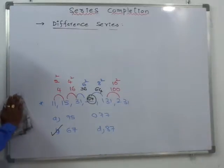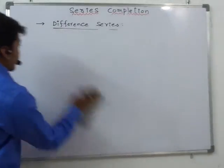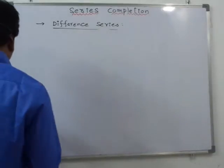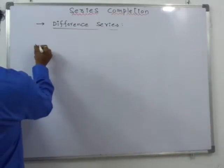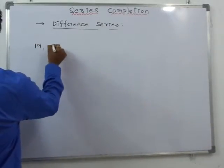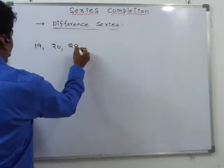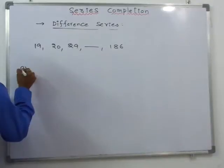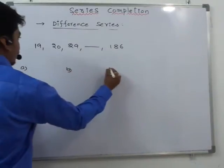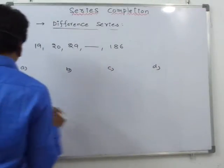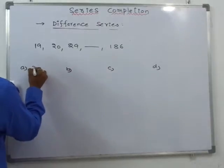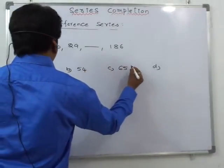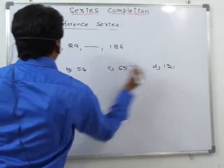Next question: 19, 20, 29, missing number, 186. Options: A: 36, B: 54, C: 65, D: 121. One of the advantages with number series questions is there must exist a symmetry between the numbers — any logic you form has to hold for the entire series.